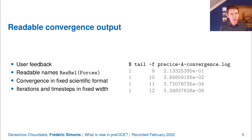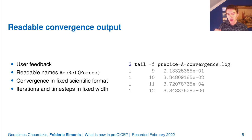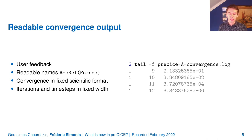Talking about convergence, we also improved the readability of the convergence output — based on user feedback. We now have readable names in the header of our convergence log files; for example, you can see this is a relative residual based on forces. We also introduced fixed width for the various columns, with a fixed scientific format for the residual, so you can simply tail the convergence log files and keep track of whether your simulation is converging.